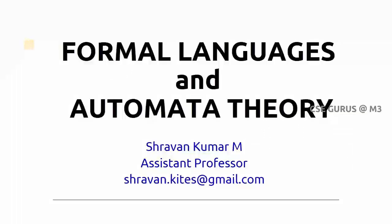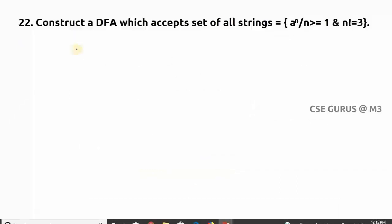Hi friends, welcome to the class of Formal Language and Automata Theory. Coming to question number 22: construct a DFA which accepts set of all strings a^n where n≥1 and n≠3. There is no input alphabet b, only sigma consisting of {a}. Now how to solve this one?